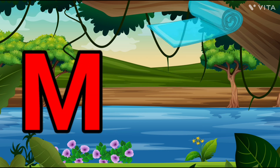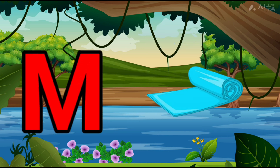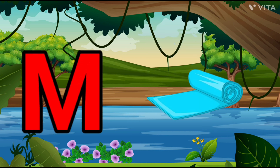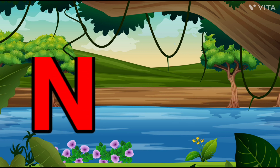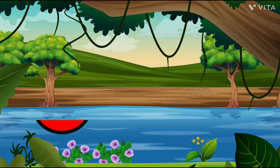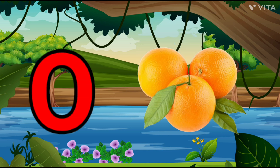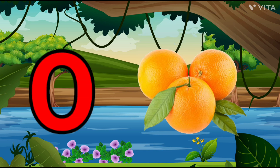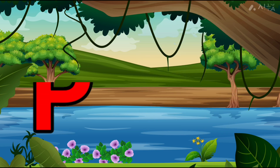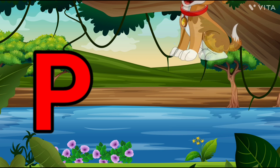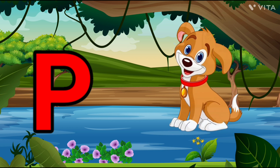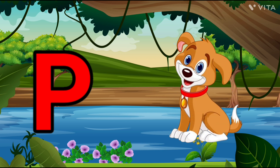M is for Mat, M-M-Mat. N is for Net, N-N-Net. O is for Orange, O-O-Orange. P is for Pet, P-P-Pet.